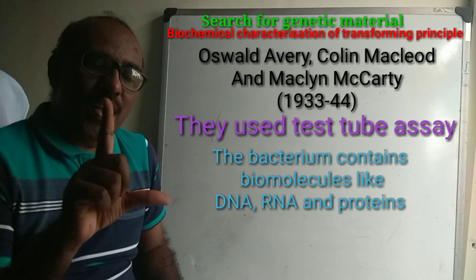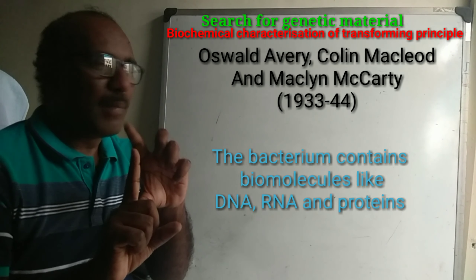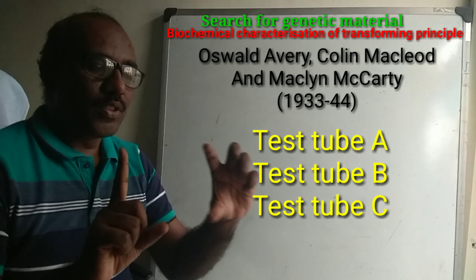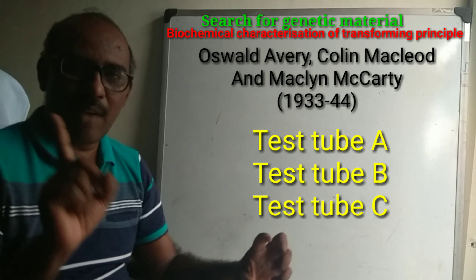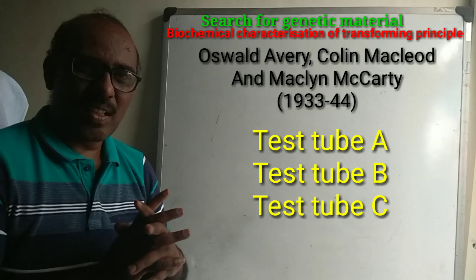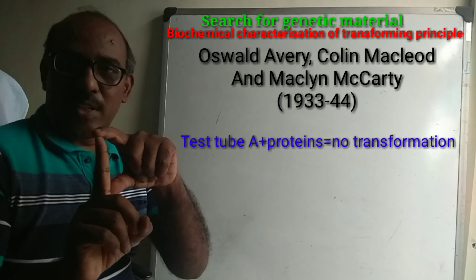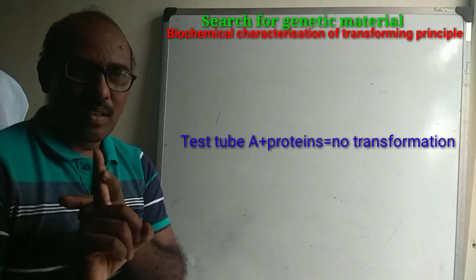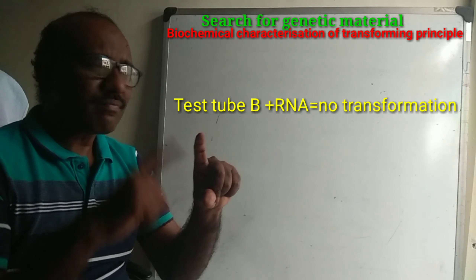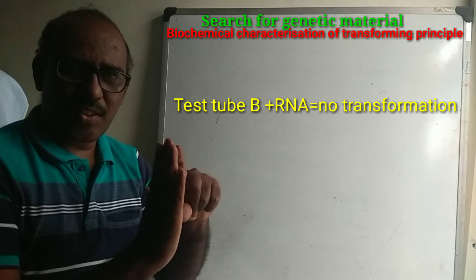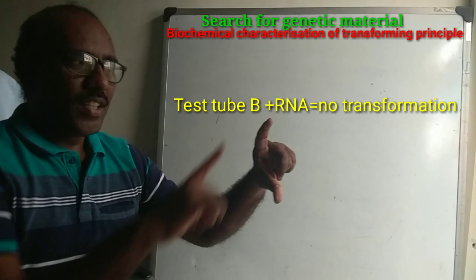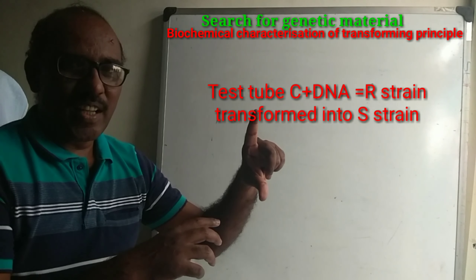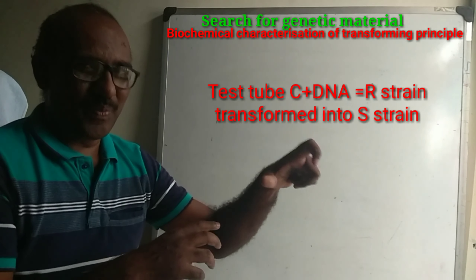After isolating biomolecules from the S strain, they set up test tubes each containing R strain, which is avirulent. They had test tube 1, test tube 2, and test tube 3. Then they checked the results — whether transformation occurred or not. It was observed that R strain got transformed into S strain.